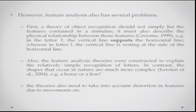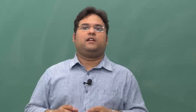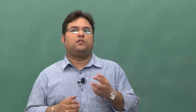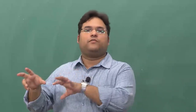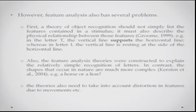Feature analysis theories also face criticism. A theory of object recognition should not simply list features in isolation — it must also describe the physical relationships between those features and how they are joined. From the Gestalt perspective, the whole is more than the sum of its parts. For example, in the letter T, the vertical line supports the horizontal line from below, whereas in the letter L, the vertical line rests at the side of the horizontal line. You can find both a horizontal and a vertical line in both L and T, so specifying their spatial relationship is essential.